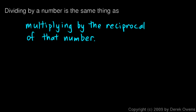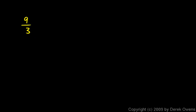Let's look at some examples. If I have 9 thirds — 9 over 3 — remember that the fraction bar really means division. So this is 9 divided by 3, which is the same thing as 9 times the reciprocal of 3. And 9 times one-third ends up being 3. So dividing by 3 is the same thing as multiplying by the reciprocal of 3.